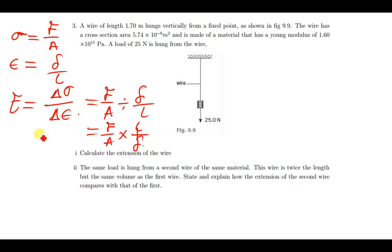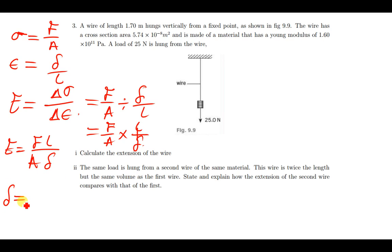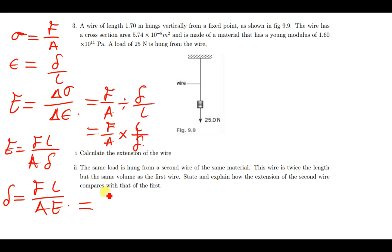This simplifies to Young's modulus equals F times L over A times the extension. When you cross-multiply to make the extension the subject of the formula, you find that extension equals F times L divided by area times the Young's modulus. This gives us the formula to calculate the extension.